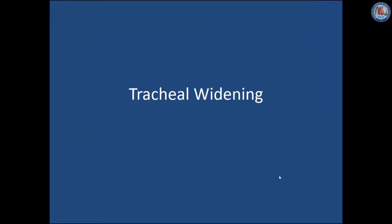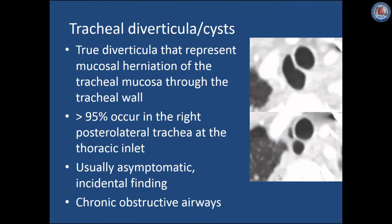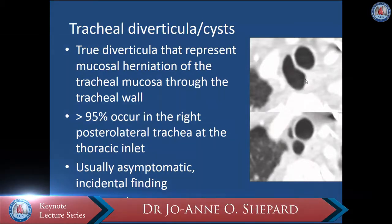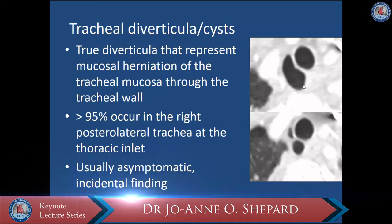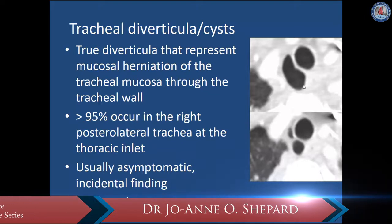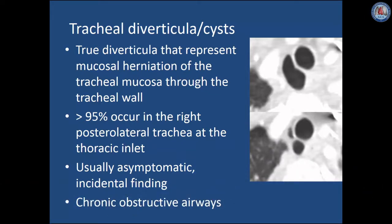There are a number of entities that cause tracheal widening. Tracheal diverticula, or cysts, are true diverticula that represent mucosal herniation of the tracheal mucosa through the tracheal wall. The vast majority occur in the right posterolateral aspect of the trachea at the thoracic inlet. They are usually asymptomatic incidental findings, but are commonly associated with patients who have chronic obstructive airways disease. In these images one can see the normal trachea, and lateral to that a small air collection representing a tracheal diverticulum.